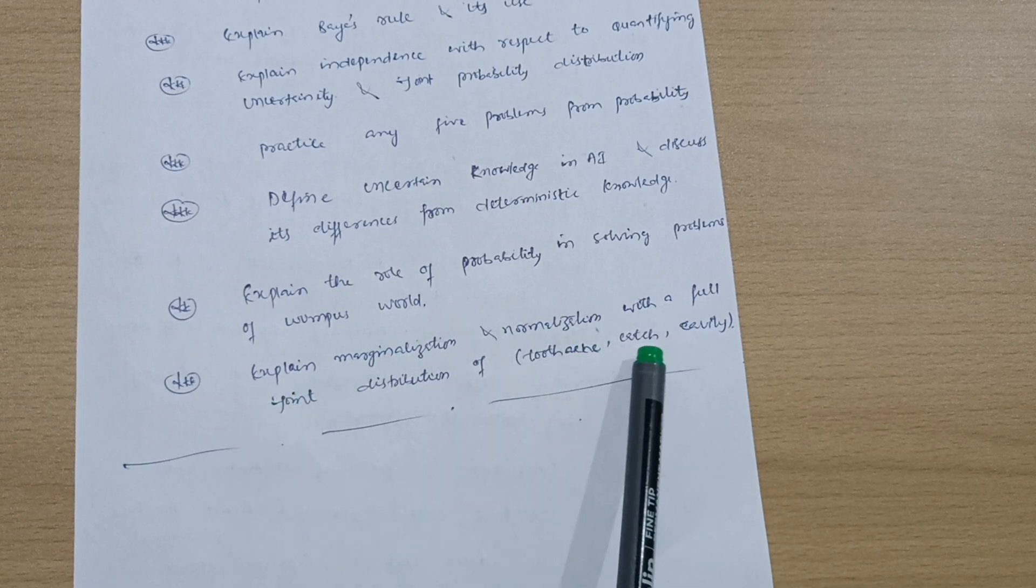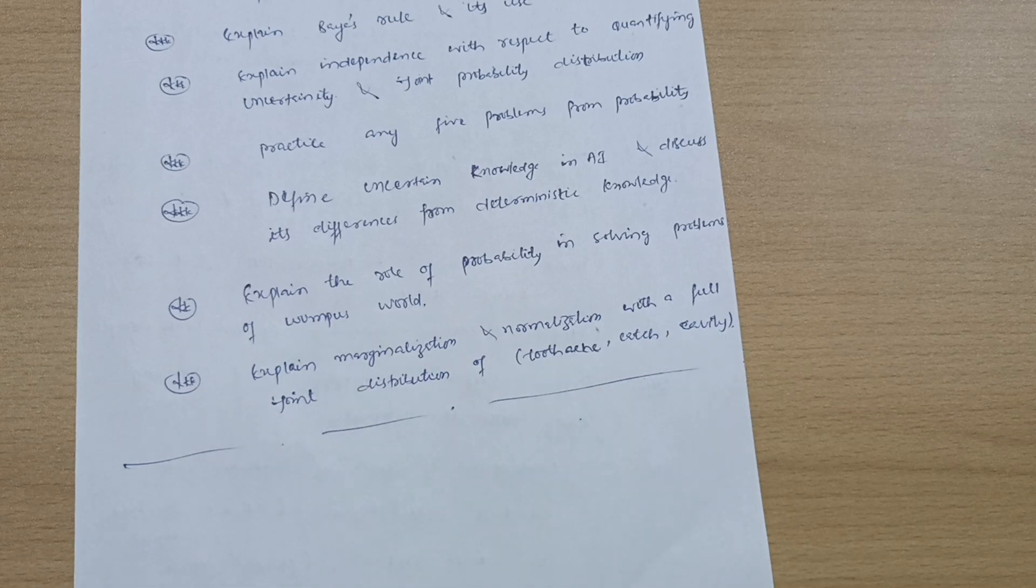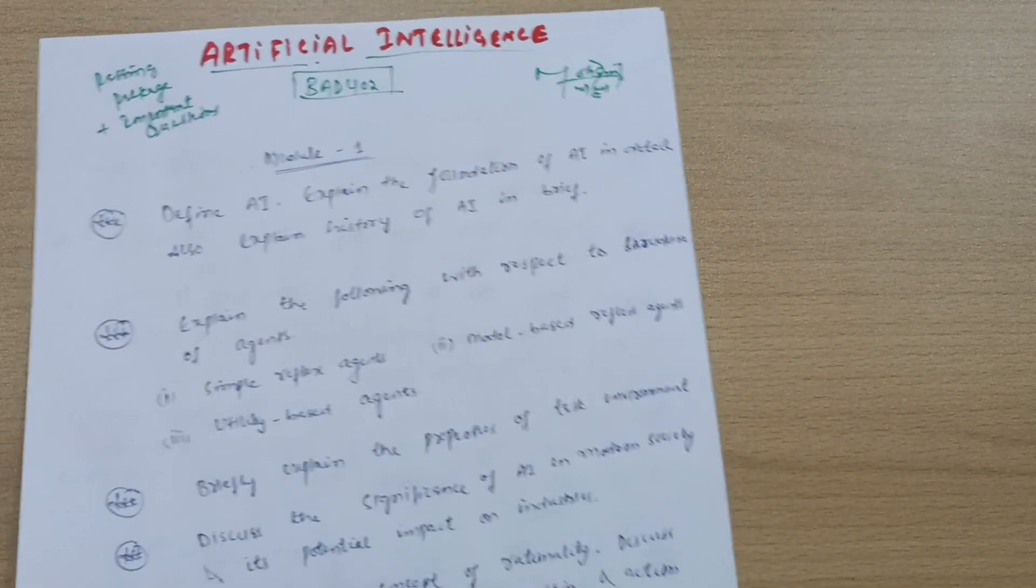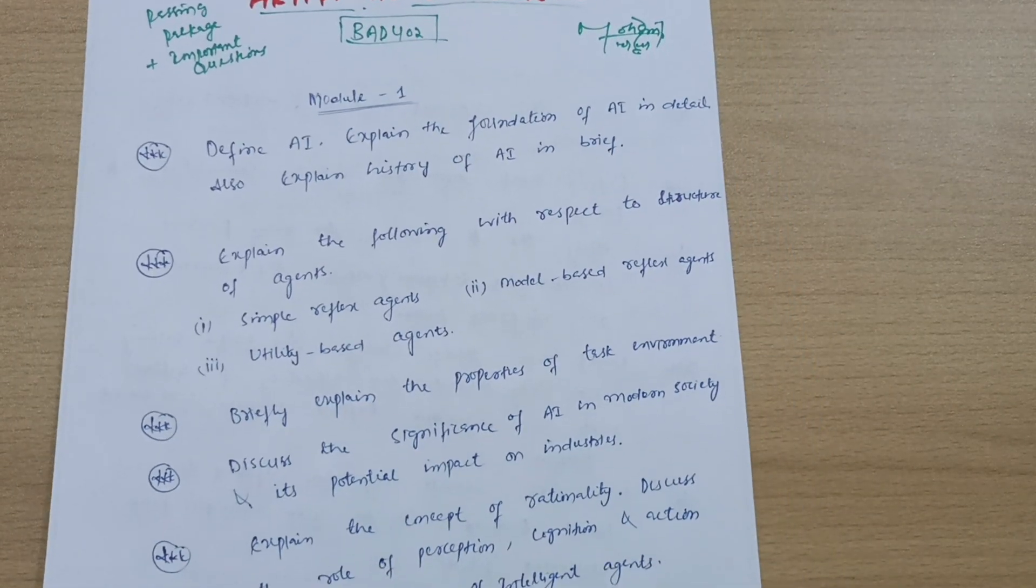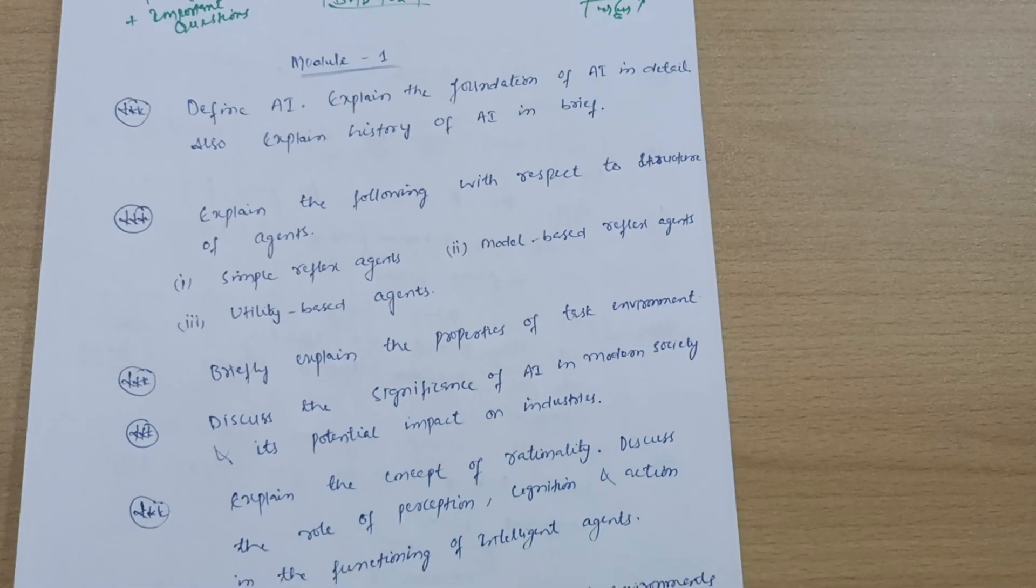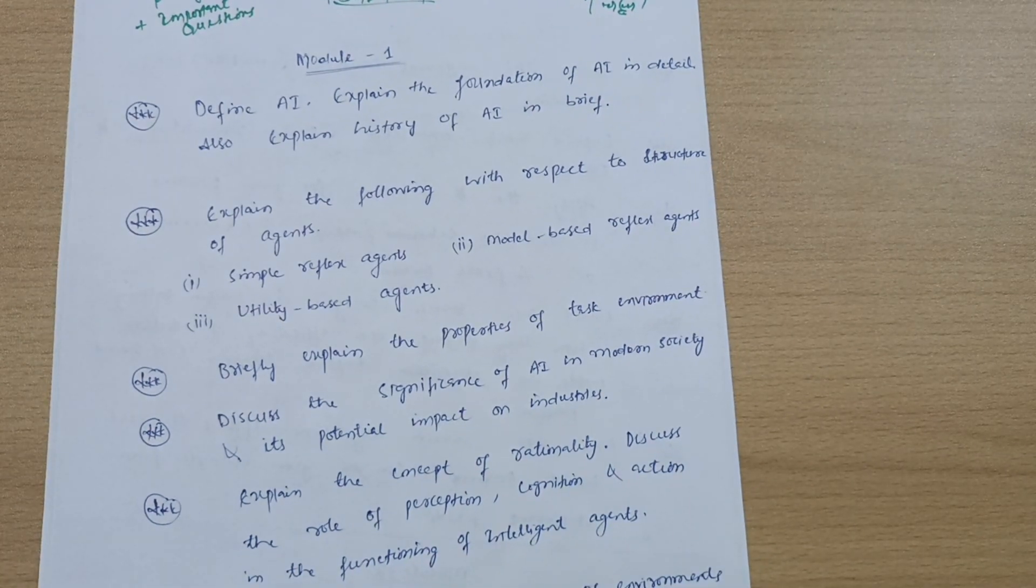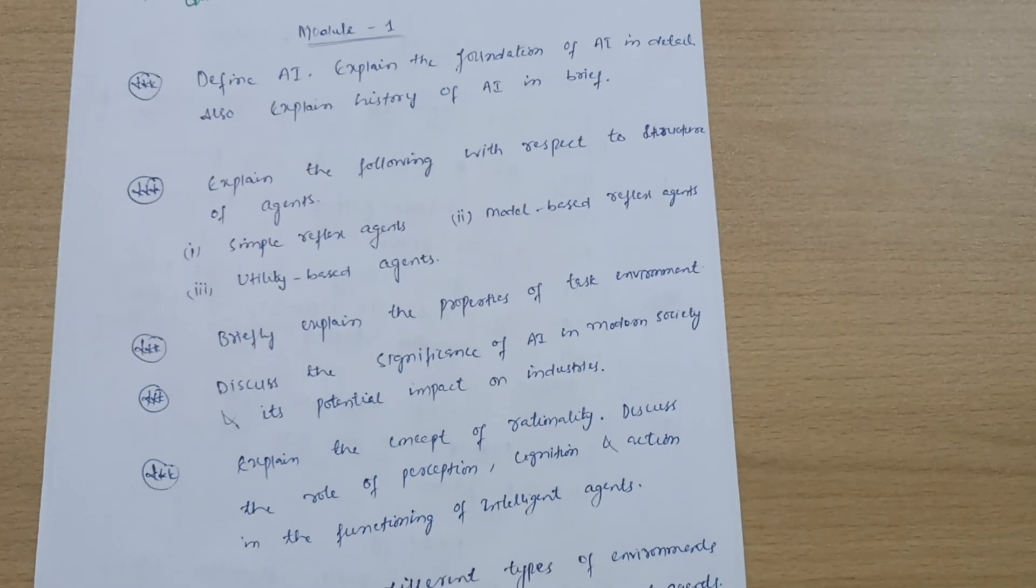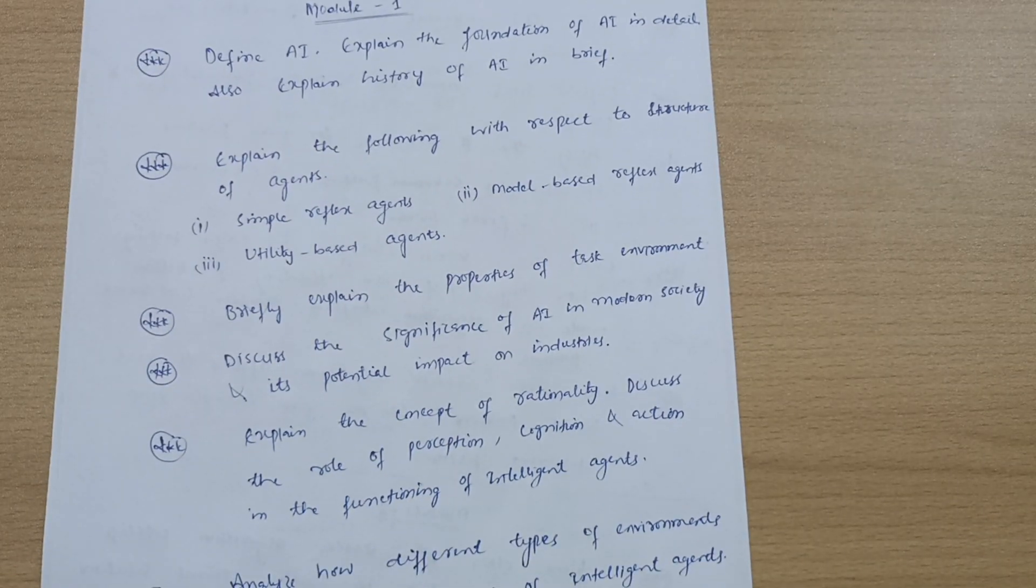This is all about Module 5. These are some super important questions which you have to cover in order to get a good score in Artificial Intelligence subject. Solutions for these important questions will be available in the description. I will provide the drive link so that you can avail notes for this subject. Go through the notes and cover the topics as much as possible. Try to fill your answer booklet as much as possible.